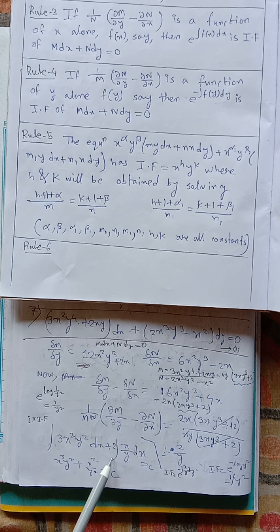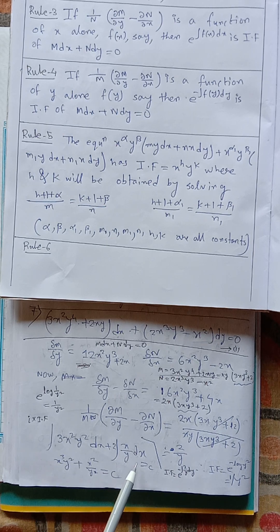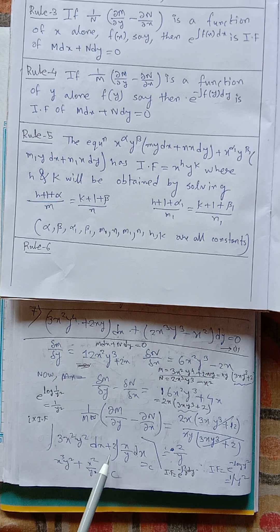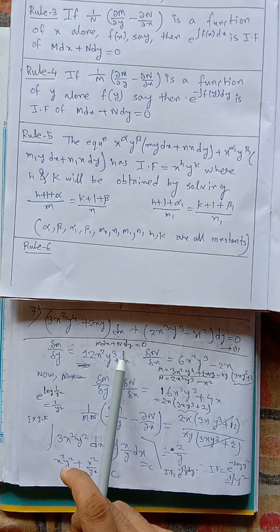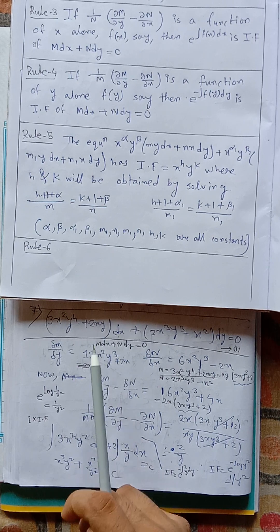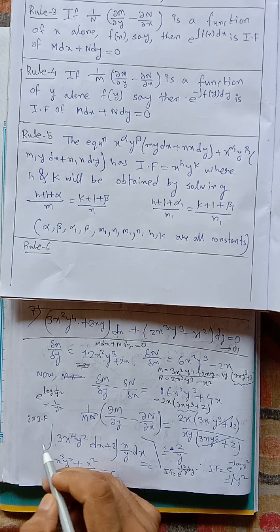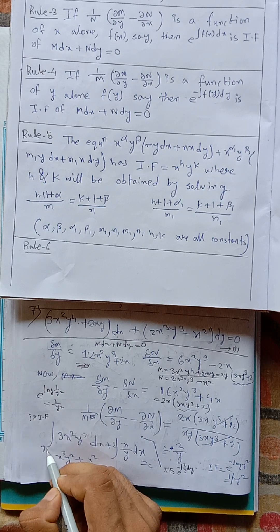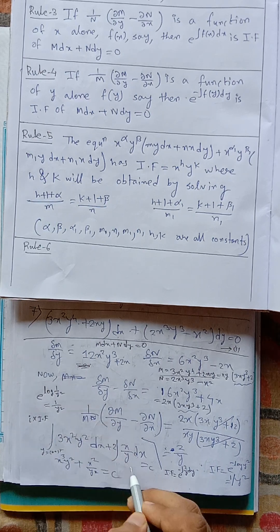Integration 3x square y square dx plus 2 integration x by y dx. And we all know that the solution of mdx plus ndy is integration mdx with y constant, here y constant, for this also.